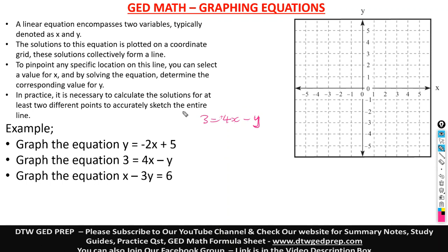I'm going to take this negative Y over to this side — it changes to a positive Y. If you don't understand this, watch the video on one-step and two-step equations. So we take this negative Y over — it becomes positive Y. And we take this 3 here — it becomes negative because here it is a positive 3. Crossing it over the equation sign, it becomes negative. So we have positive Y equals 4X minus 3.